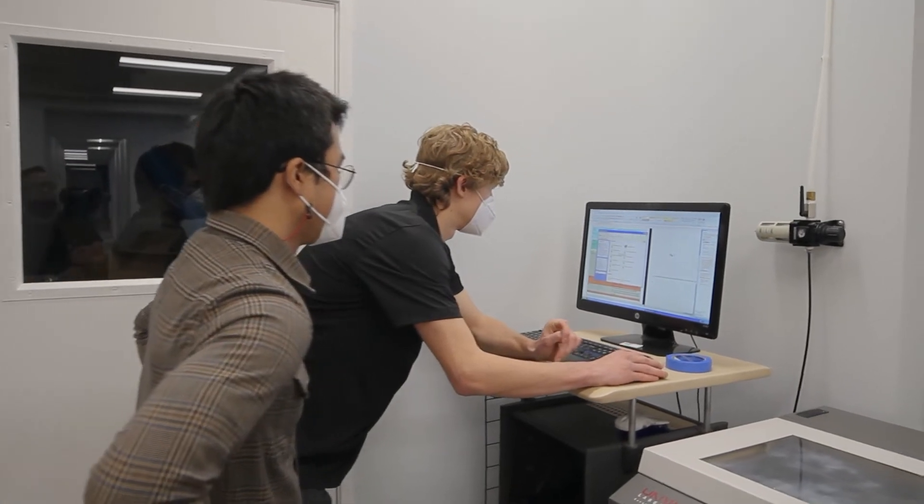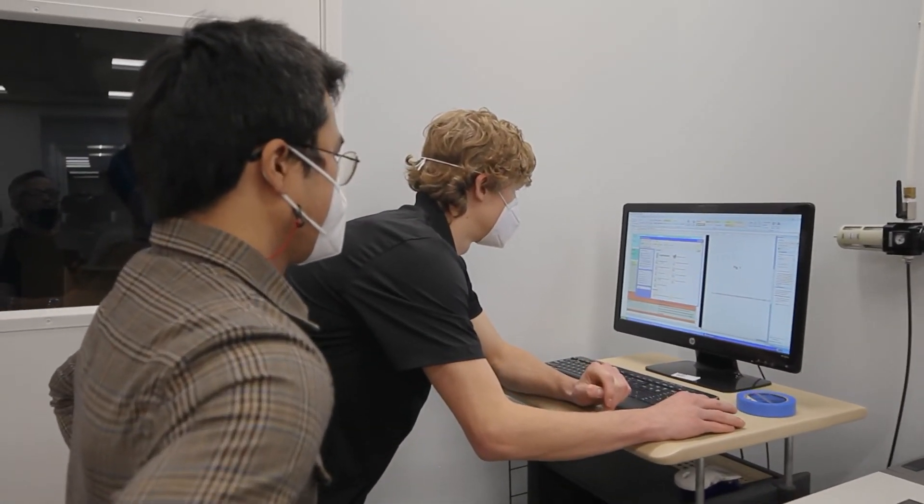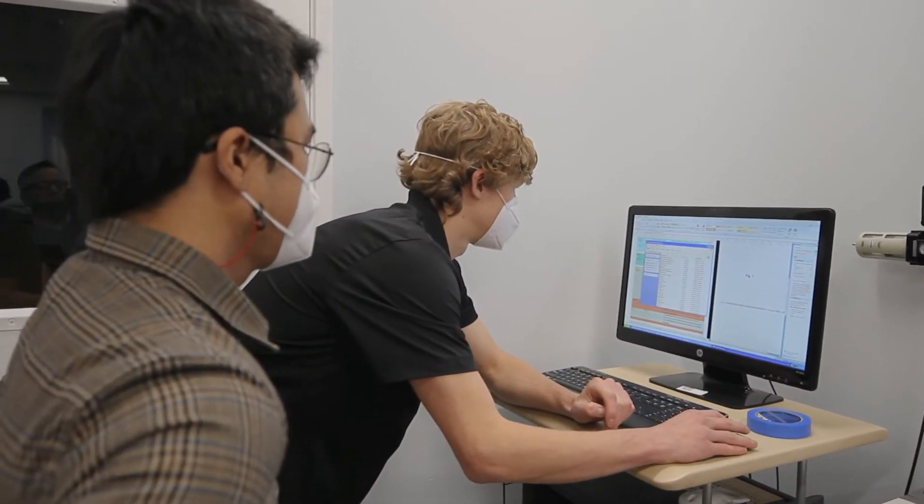The work instruction breaks down complex manufacturing processes into simple and easy to understand steps. This allows for any team member to pick up and continue a build throughout any step of the manufacturing process. The work instruction emphasizes quality throughout in order to ensure continuous improvement of our products.